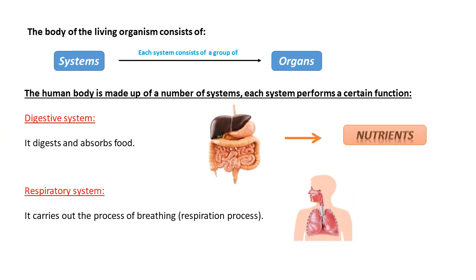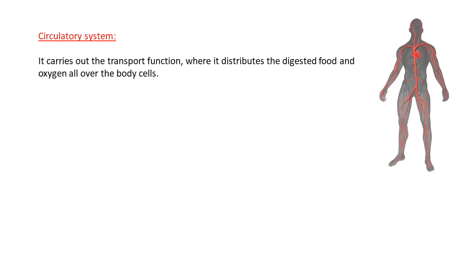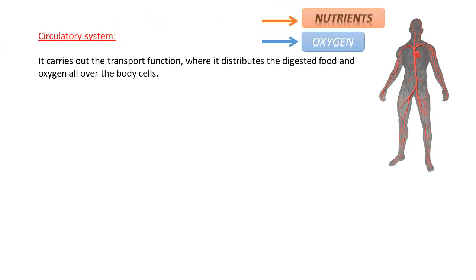The respiratory system carries out the process of breathing or respiration. The purpose of the digestive system is to absorb nutrients from food, and the purpose of the respiratory system is to take in oxygen from air. The circulatory system carries out the transport function, distributing digested food and oxygen all over the body cells.